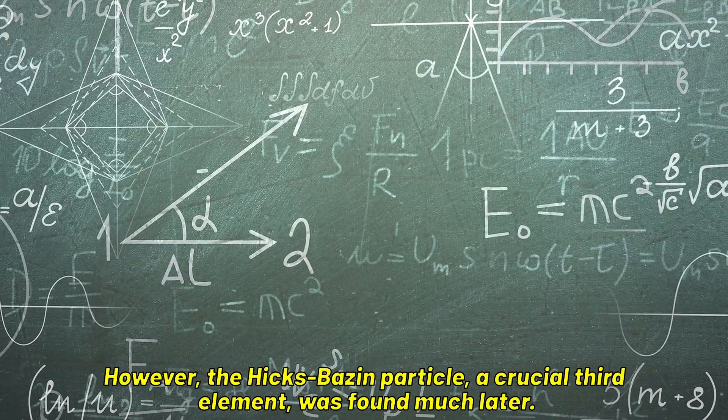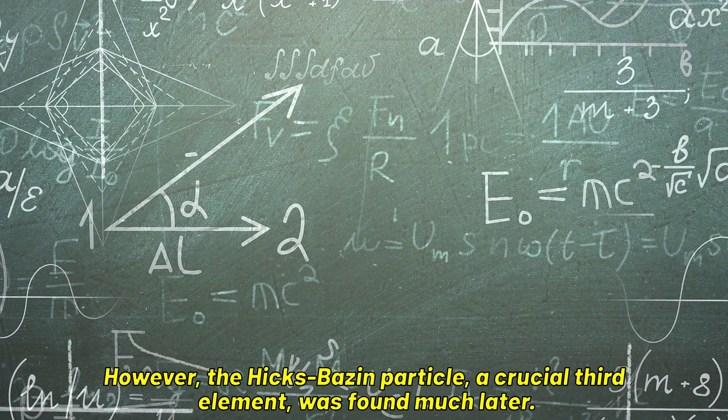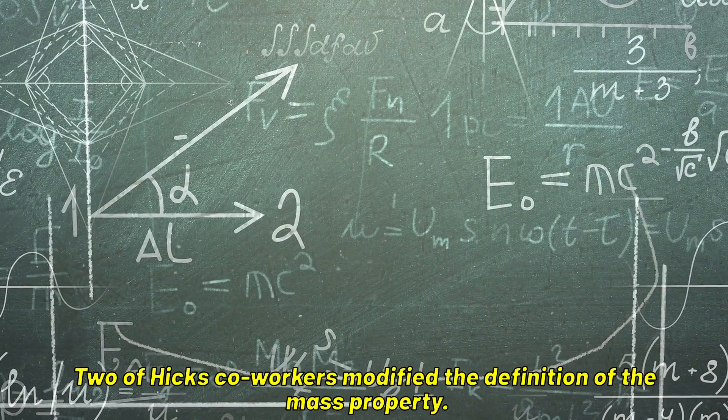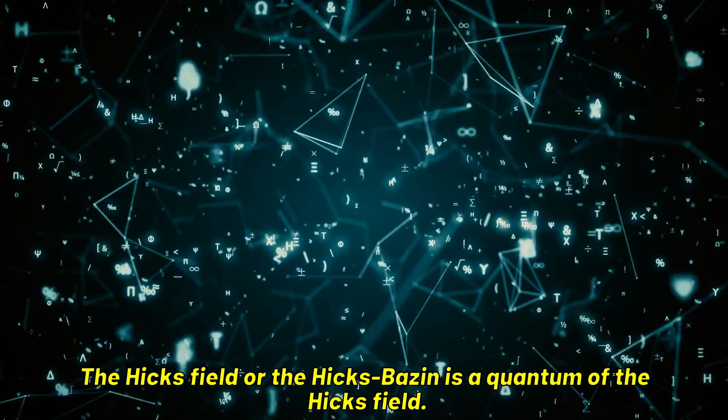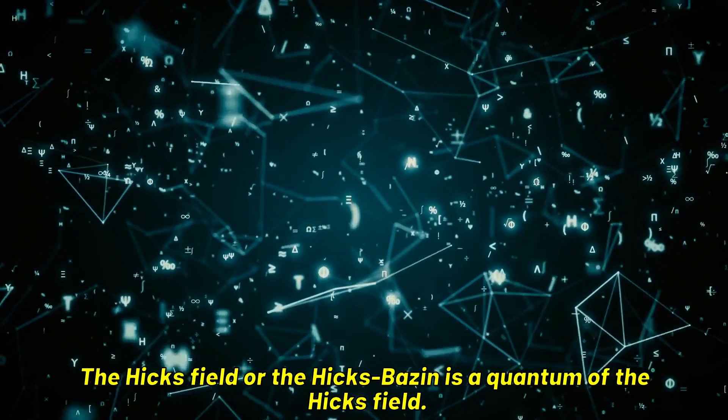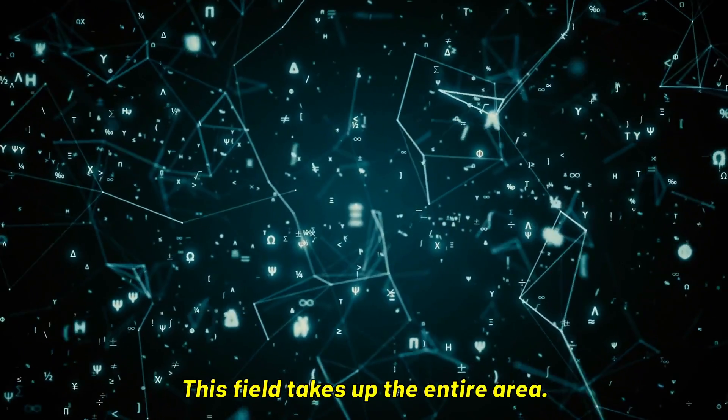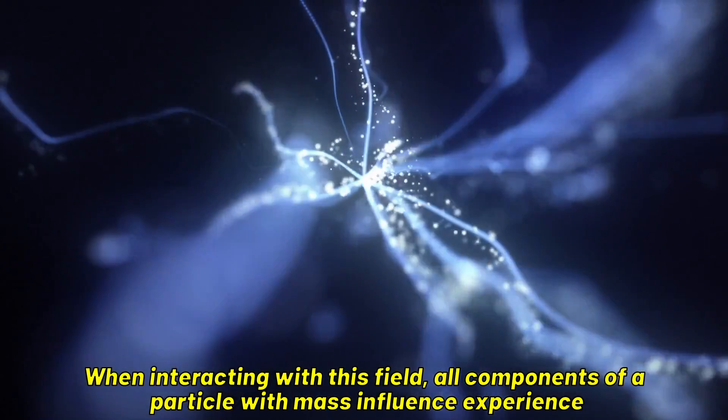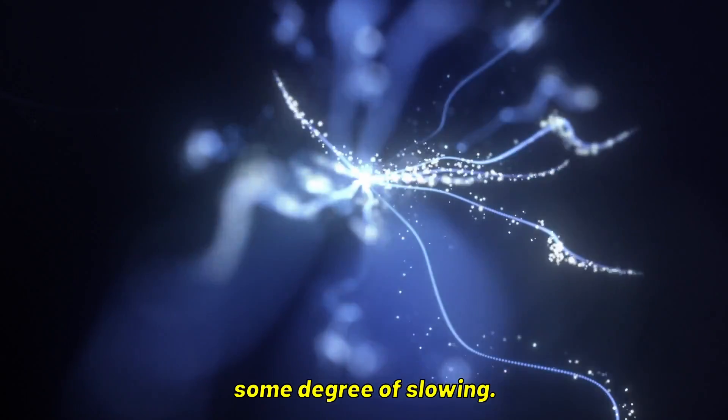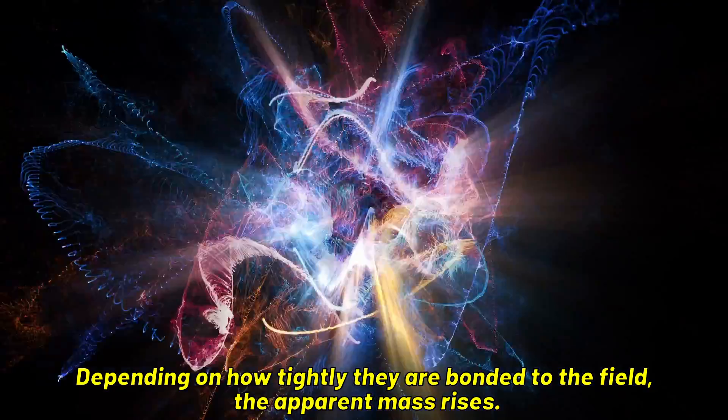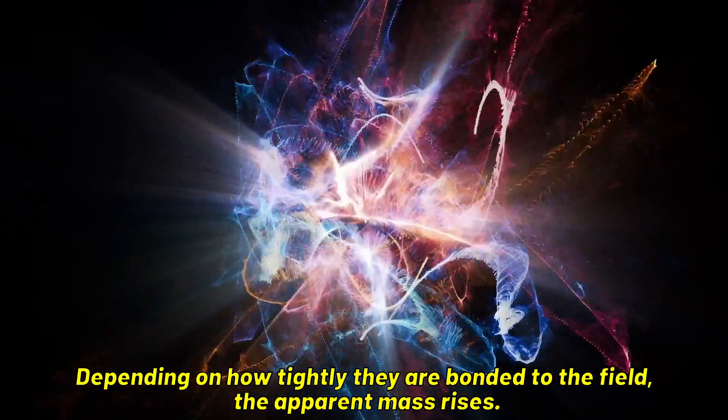However, the Hicks Basin Particle, a crucial third element, was found much later. Two of Hicks' co-workers modified the definition of the mass property. The Hicks Field, or the Hicks Basin, is a quantum of the Hicks Field. This field takes up the entire area. When interacting with this field, all components of a particle with mass influence experience some degree of slowing. Depending on how tightly they are bonded to the field, the apparent mass rises.